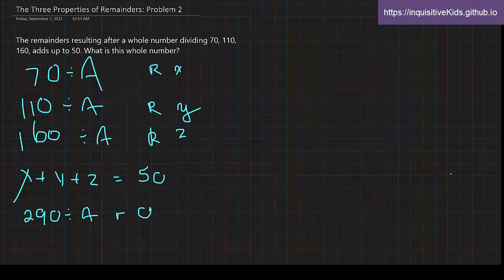So there are multiple different possibilities for A right now. There's 1, 290, 2, 145, 5, 58, 10, 29.